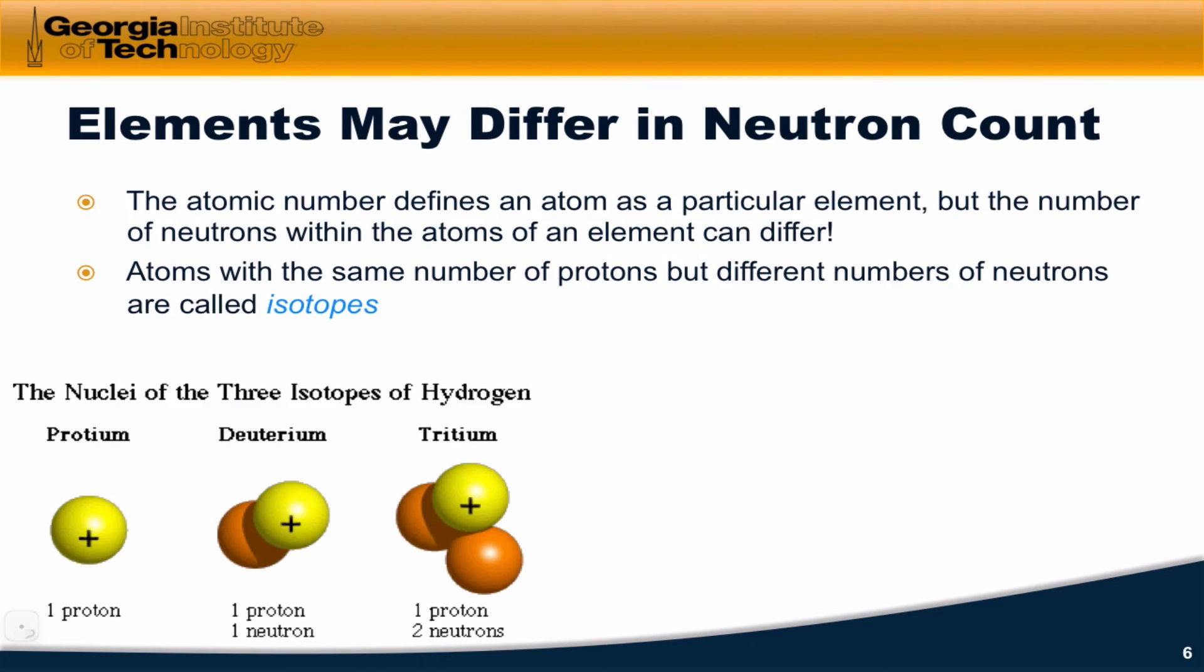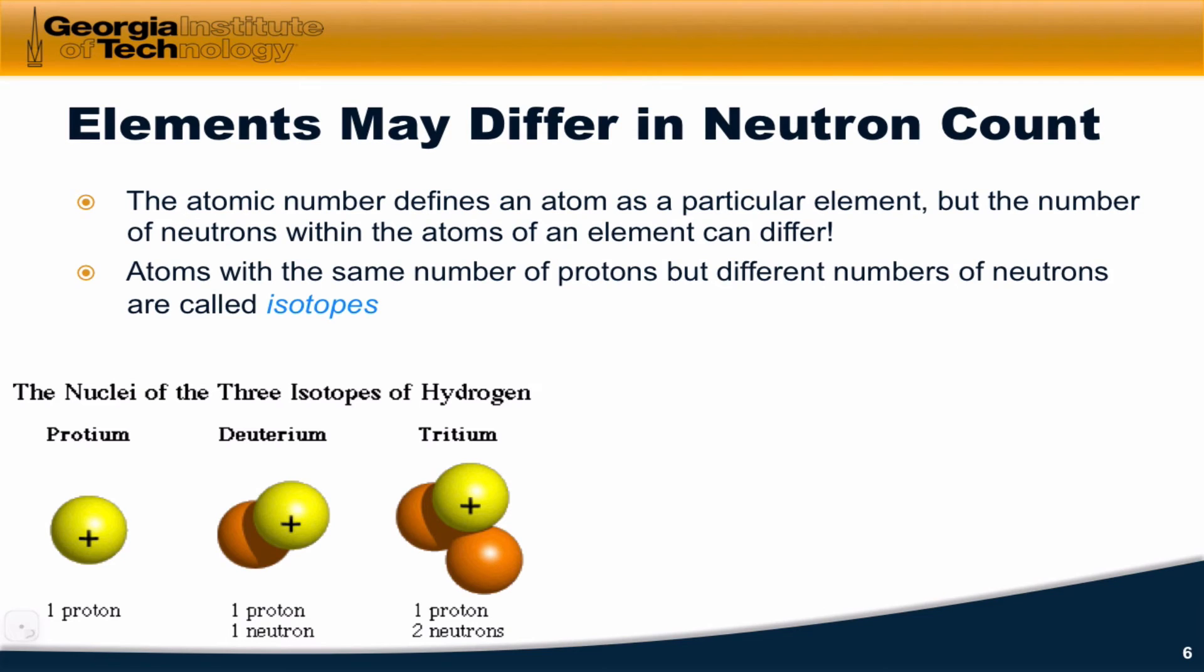Here's an example of the three isotopes of hydrogen. In protium, the most common isotope of hydrogen, the nucleus is simply a single proton with a single electron. In deuterium, we still have a single proton and a single electron, but a neutron can also be found in the nucleus. And in tritium, we have two neutrons and one proton in the nucleus along with the one electron.